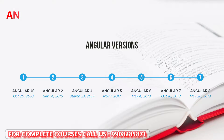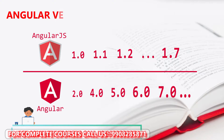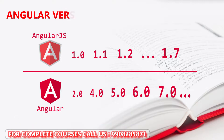Let's see the different versions supported by Angular. Angular is further categorized into two sectors: AngularJS and Angular. AngularJS is nothing but Angular 1. When we talk about Angular, we have separate versions: 2, 4, 5, 6, 7. Right now the current version is Angular 7.